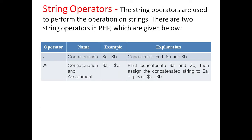String operators. The string operators are used to perform operations on strings. There are two string operators in PHP. First is concatenate, which concatenates both a and b. Concatenation and assign first concatenates a and b and then assigns the concatenated string to a.